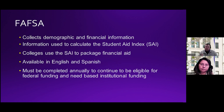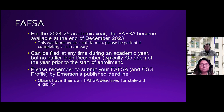The FAFSA collects demographic and financial information and is used to calculate a Student Aid Index. All colleges and universities use the Student Aid Index to calculate and package your financial aid — your SAI will be the same at every college and university. It is available in English, Spanish, and several other languages. It must be completed annually to be eligible for federal funding as well as institutional aid. The FAFSA did become available at the end of December — it launched as a soft launch and still has some quirks and glitches, but it is working for the most part.